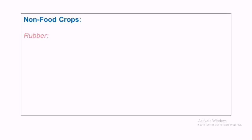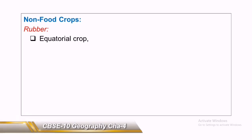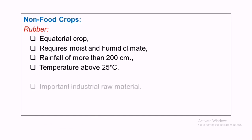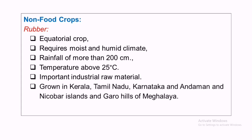Non-food crops — the first example is rubber. It is an equatorial crop requiring moist and humid climate with rainfall of more than 200 centimeters and a temperature of about 25 degrees Celsius. It is an important industrial raw material. It is grown in Kerala, Tamil Nadu, Karnataka, Andaman and Nicobar Islands, and on the Garo Hills of Meghalaya. In 2010–11, India ranked fourth in the world in rubber production.